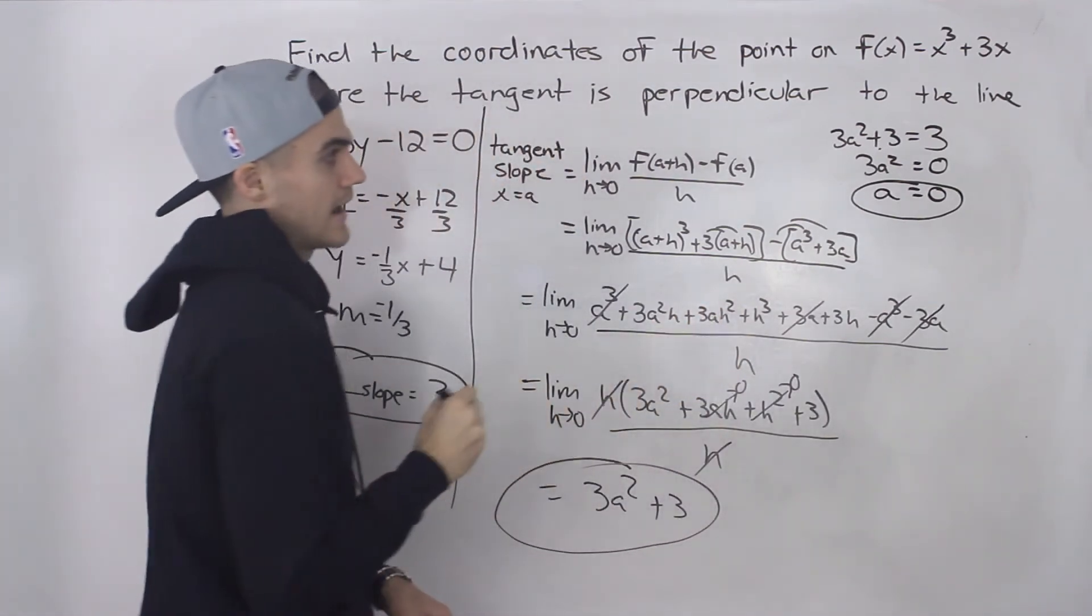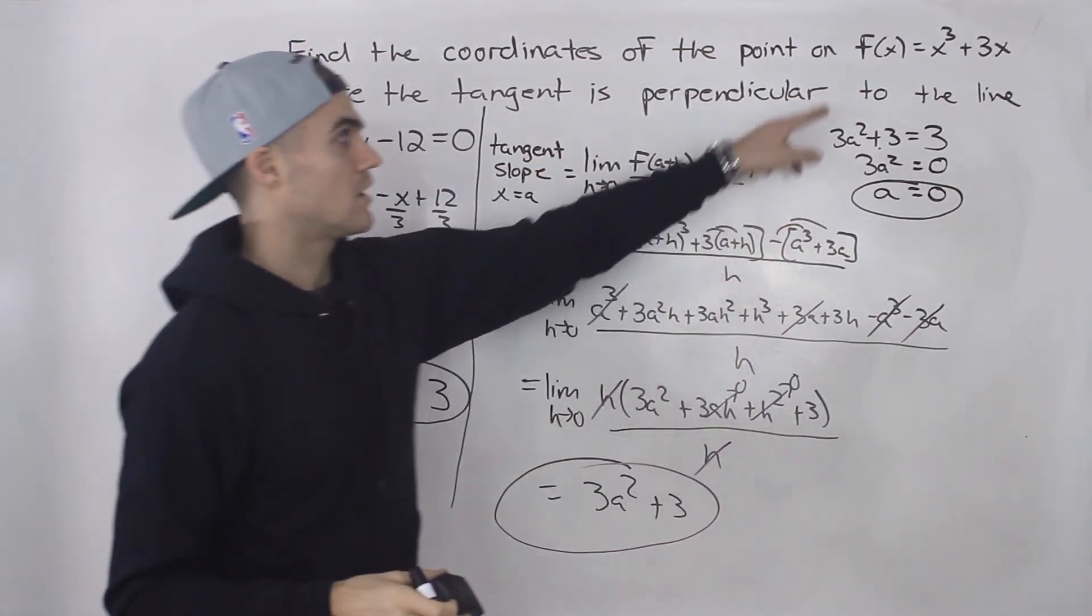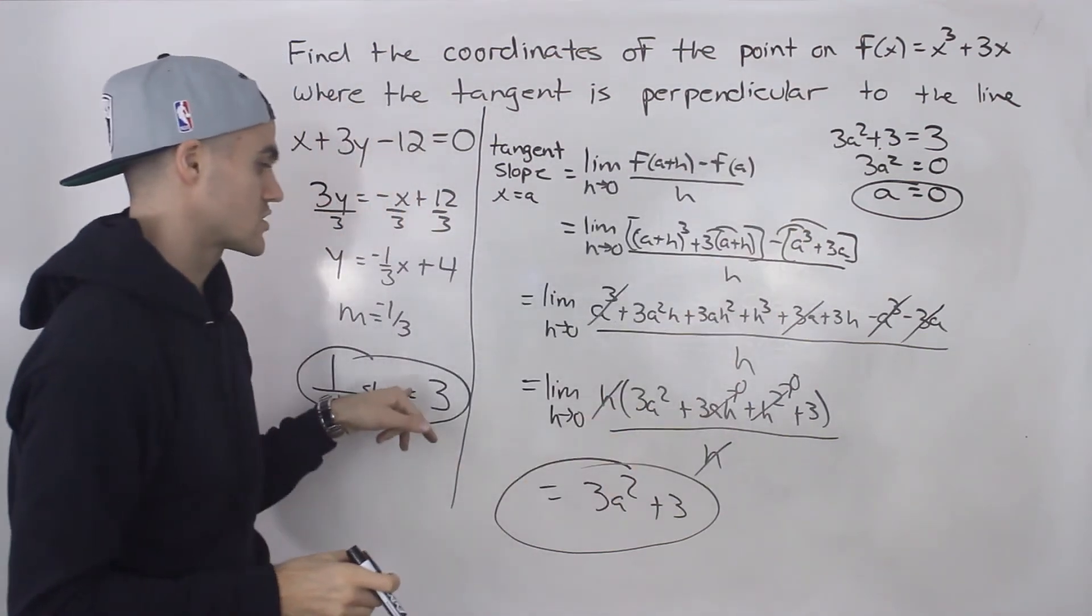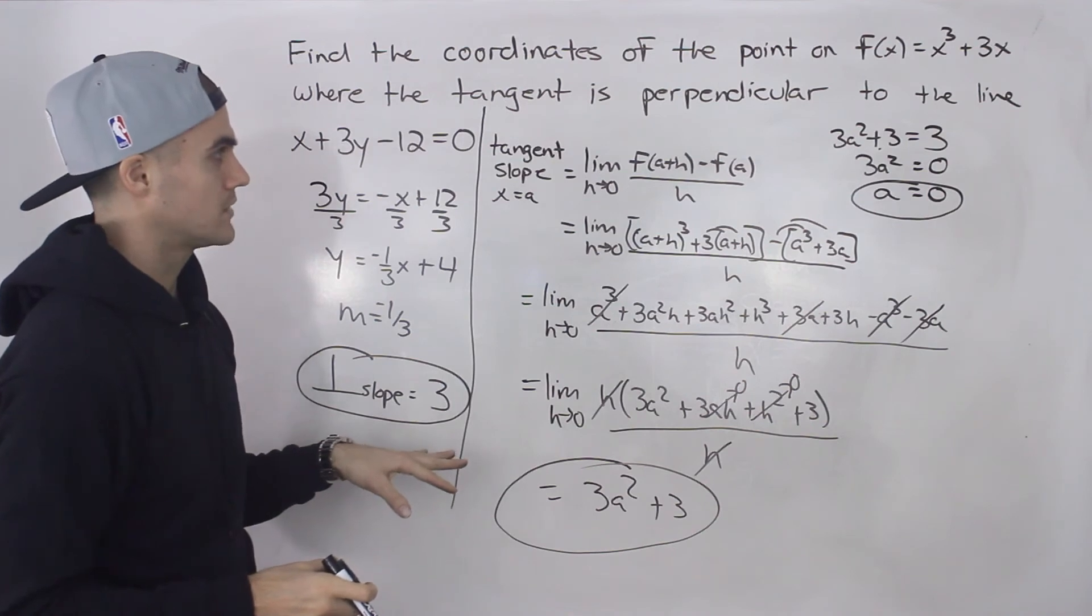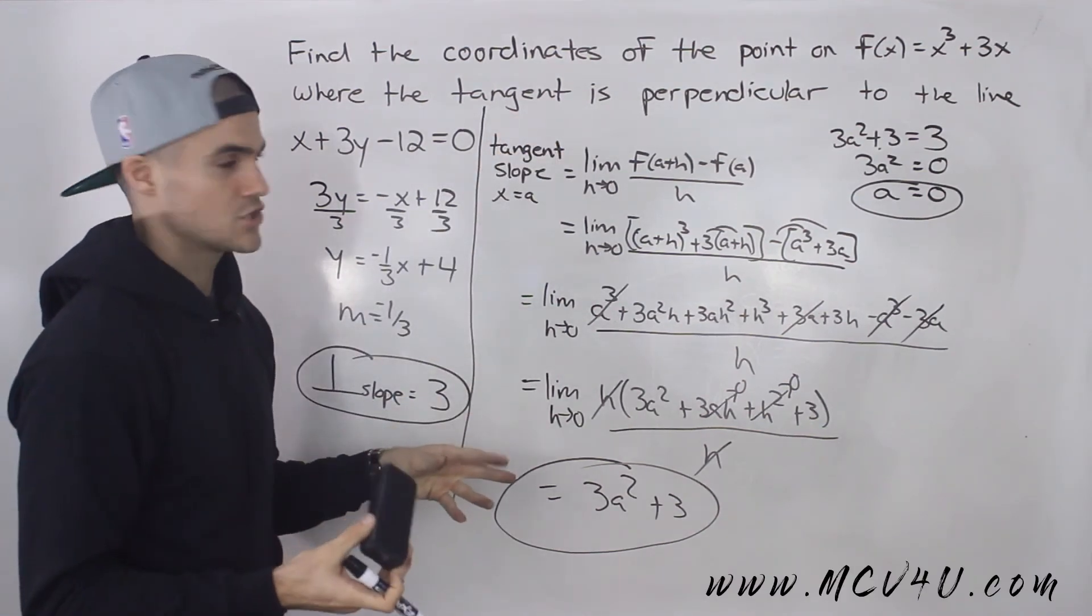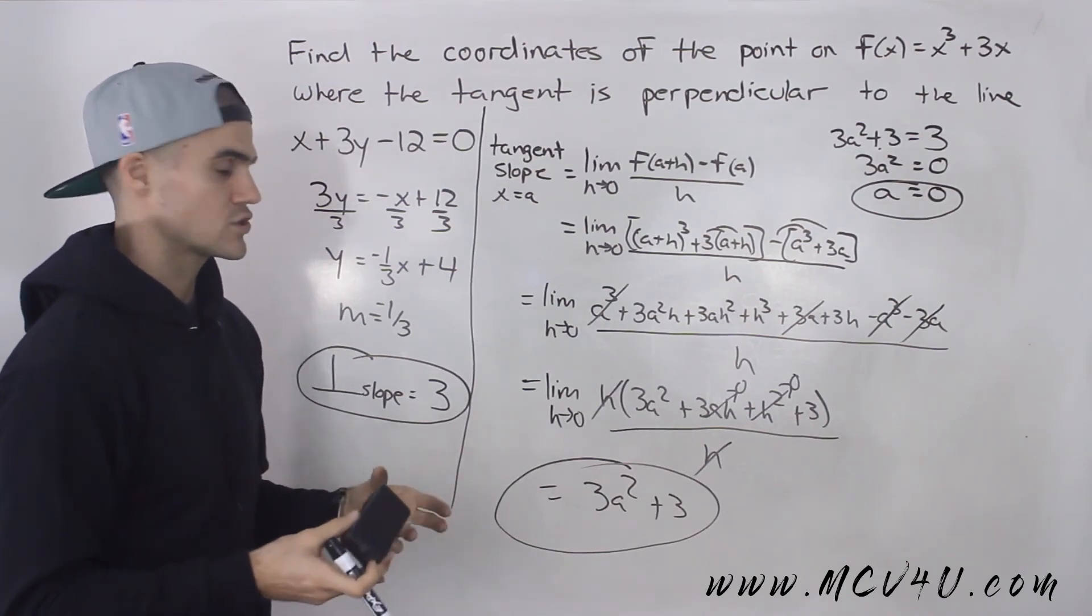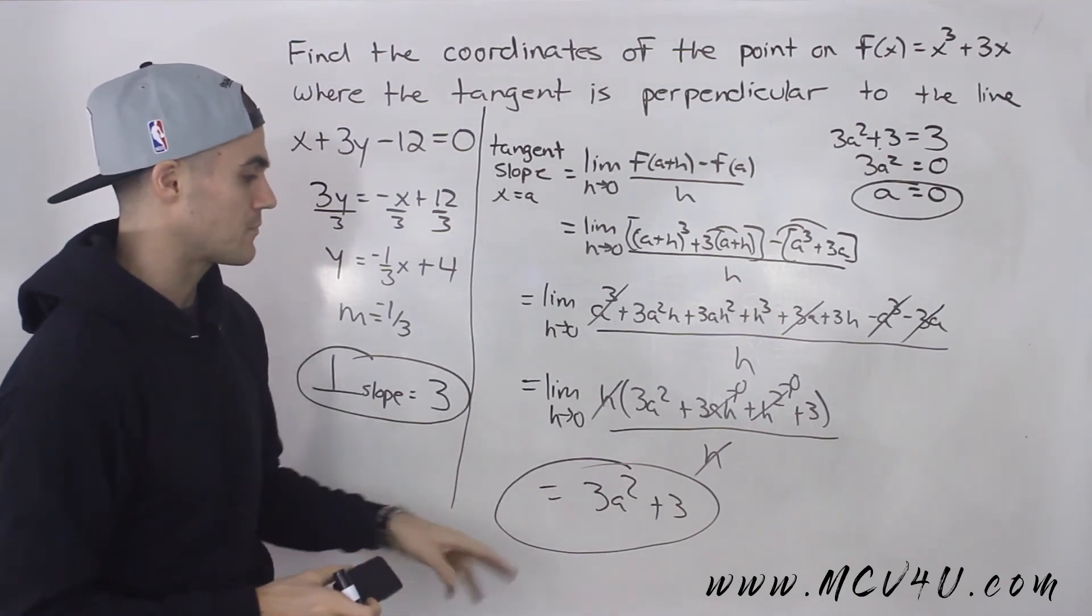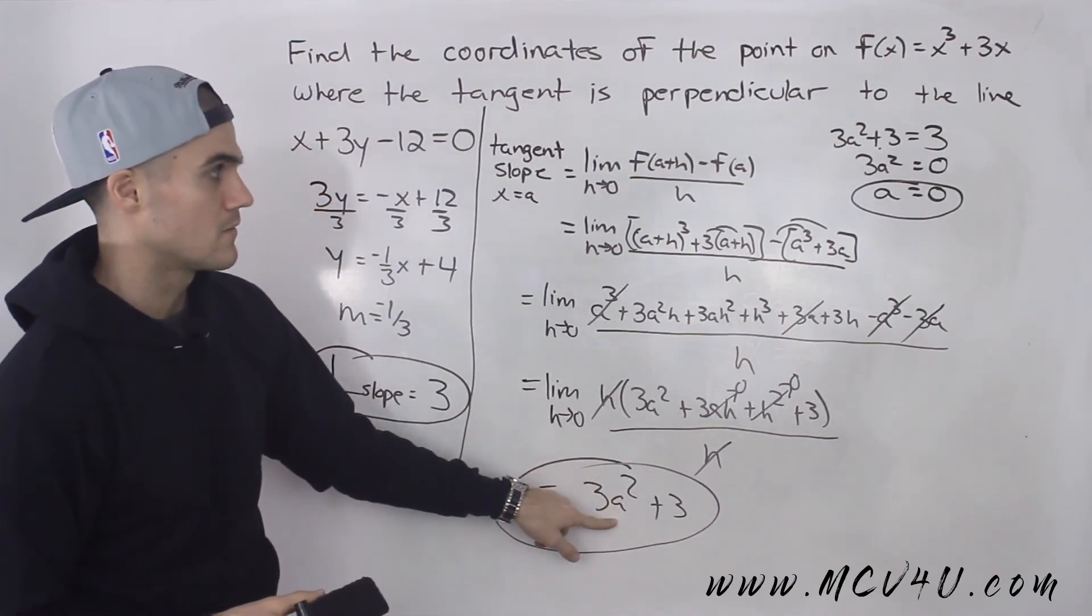So at an x value of 0, the slope of the tangent on this function is going to have a slope of 3. So usually what happens is that we have to find the slope of the tangent at a specific x value. That's most questions that you receive, that's what's going to happen. So you find the general expression, and then you're plugging in that x value.